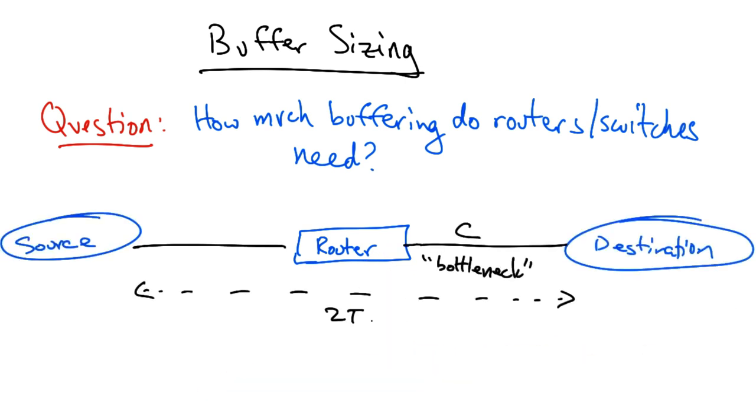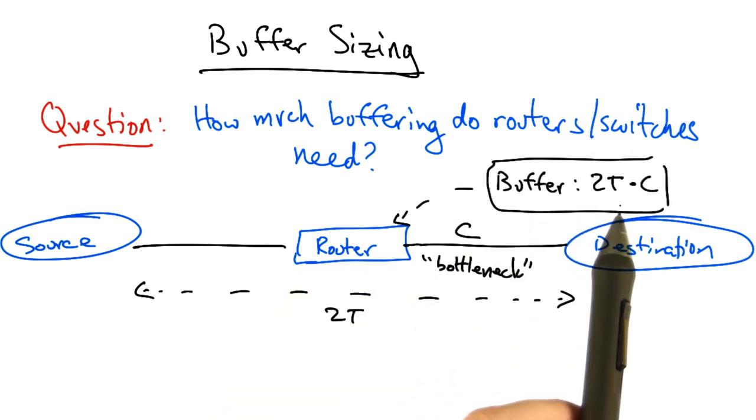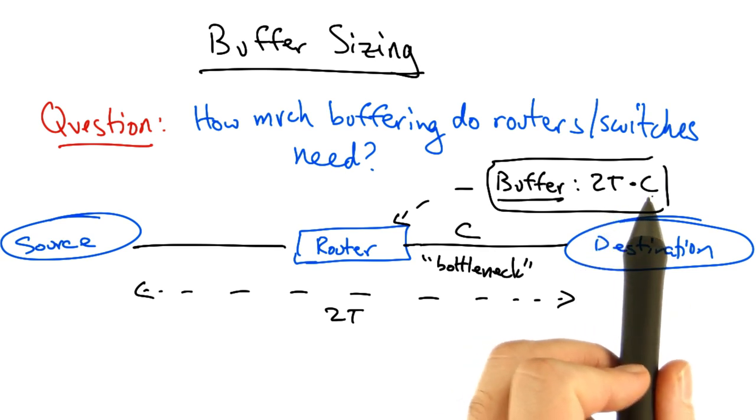So let's suppose that we have a path between a source and a destination, and the round trip propagation delay is 2T, and the capacity of the bottleneck link is C. Now the commonly held view is that this router needs a buffer of 2T times C. It should be clear why this rule of thumb exists.